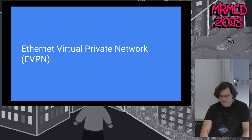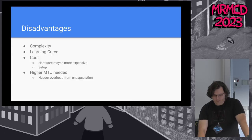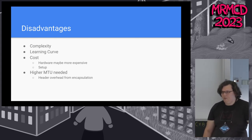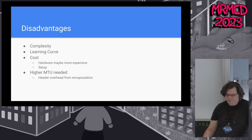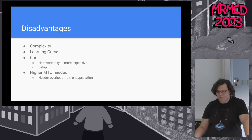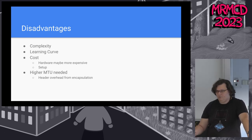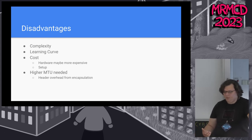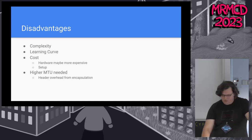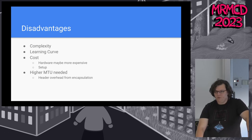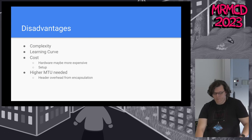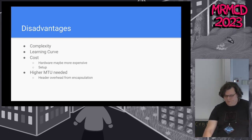So EVPN was created. The disadvantages of EVPN are complexity — the learning curve is very high in the beginning, especially for setting it up. The cost for an EVPN-capable switch is a lot higher than a simple Layer 2 switch, because it has to do a lot more — it has to be able to route traffic. The setup itself costs because I have to train all my employees on EVPN. Another disadvantage is that I always have to encapsulate all traffic, which adds IP overhead and header overhead and loses a bit of MTU, though most devices can nowadays use MTUs over 9000.